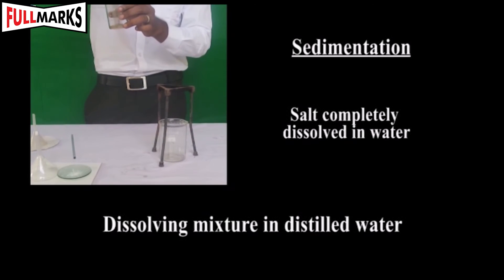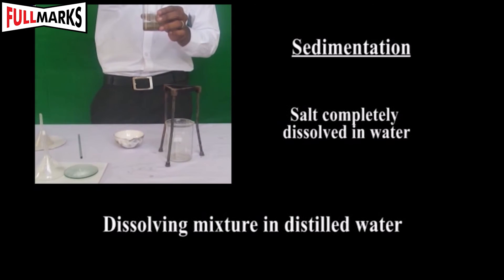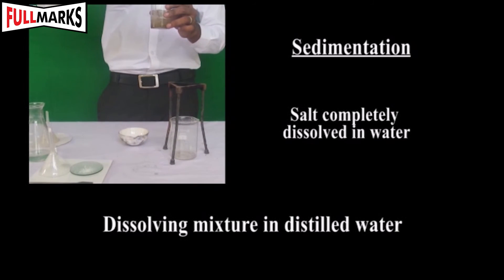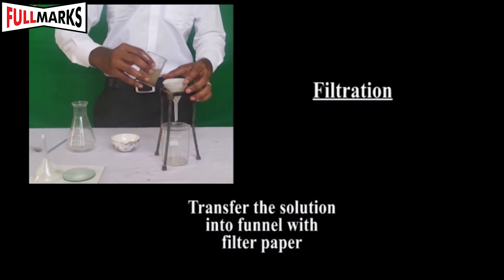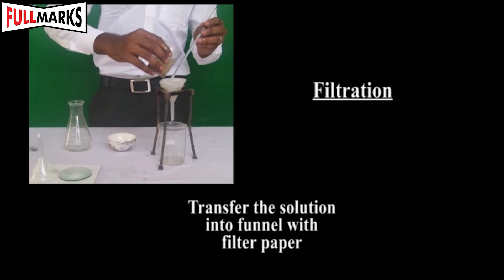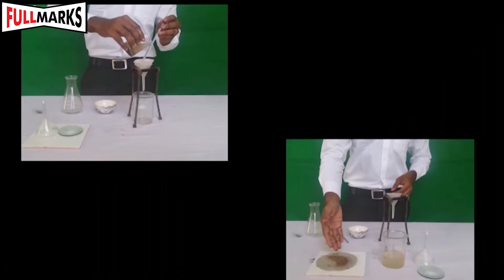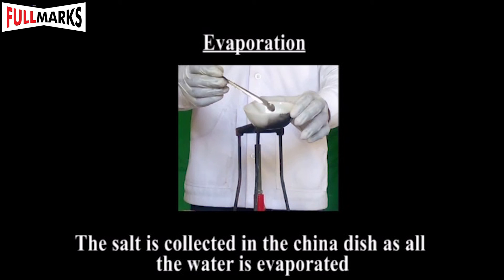Sedimentation and Filtration: Separation of sand from the mixture. The mixture left from the sublimation step is transferred into a beaker. Add 5 to 10 ml of distilled water into the mixture and stir it with a glass rod. Make a cone of filter paper as shown in the diagram. Fix this cone in the glass funnel and place the funnel over the tripod stand. Place a clean beaker under the stem of the funnel. Transfer the solution into the funnel with filter paper for filtration slowly. The residue collected on the filter paper is sand, and the filtrate is salt solution.